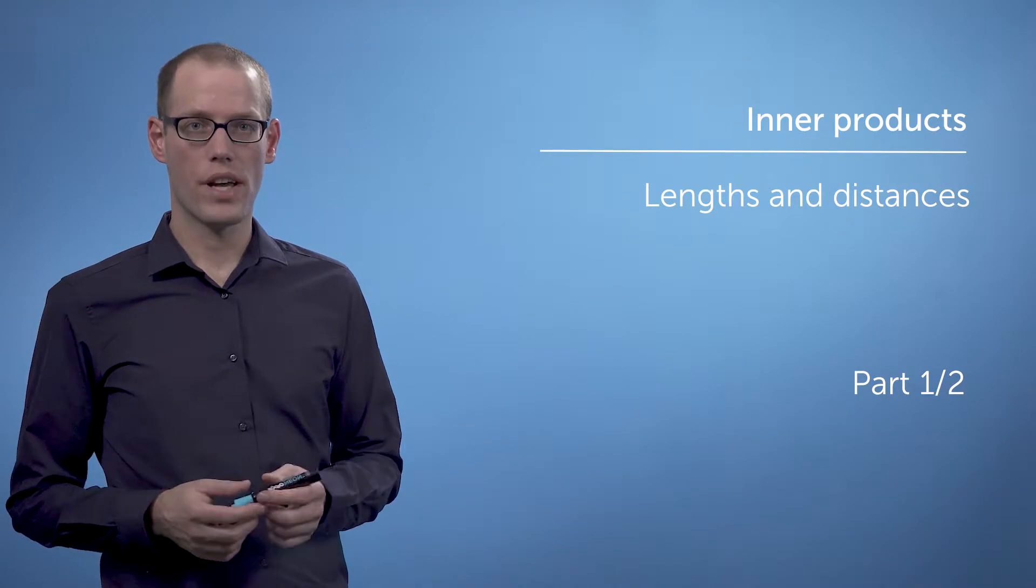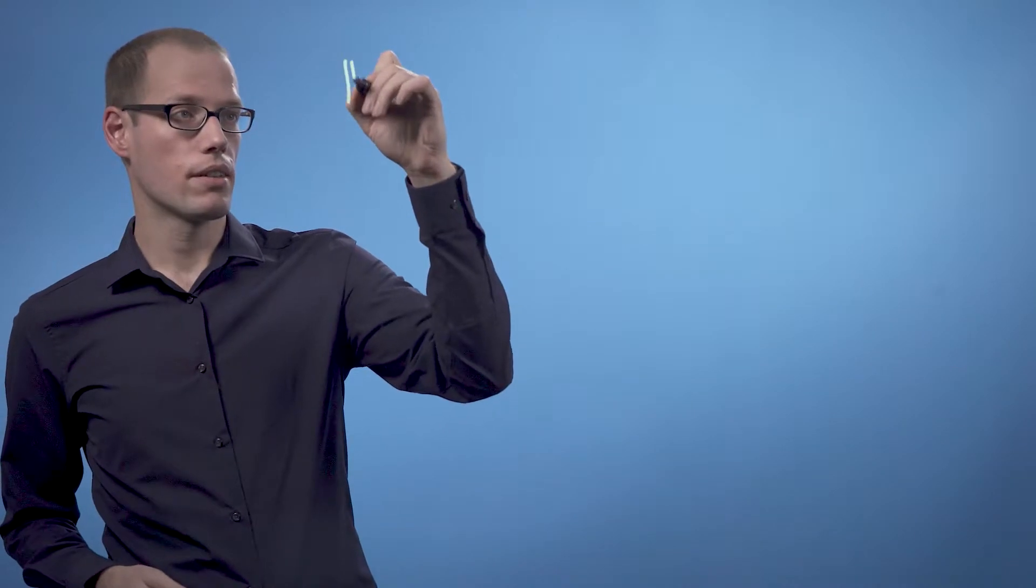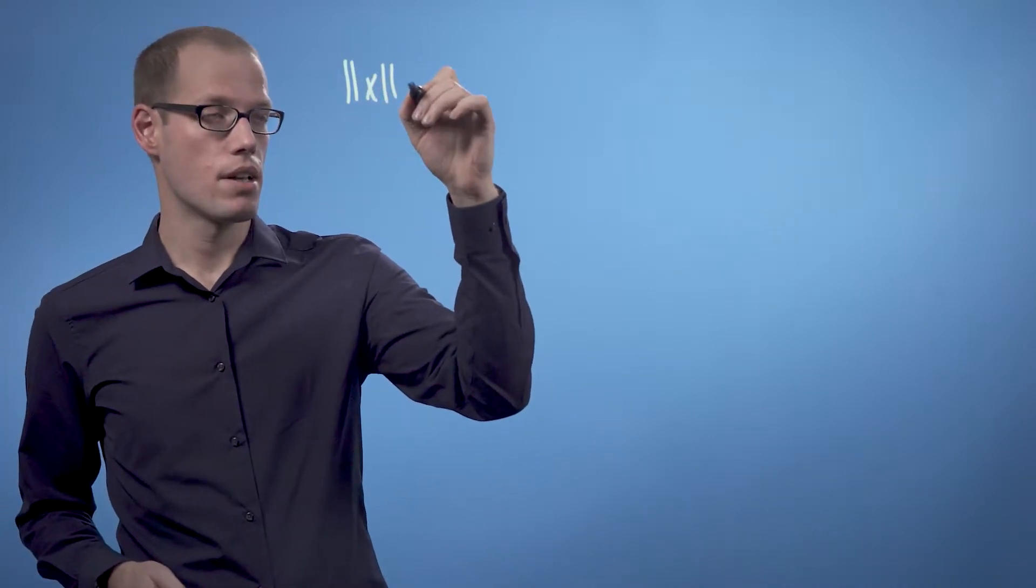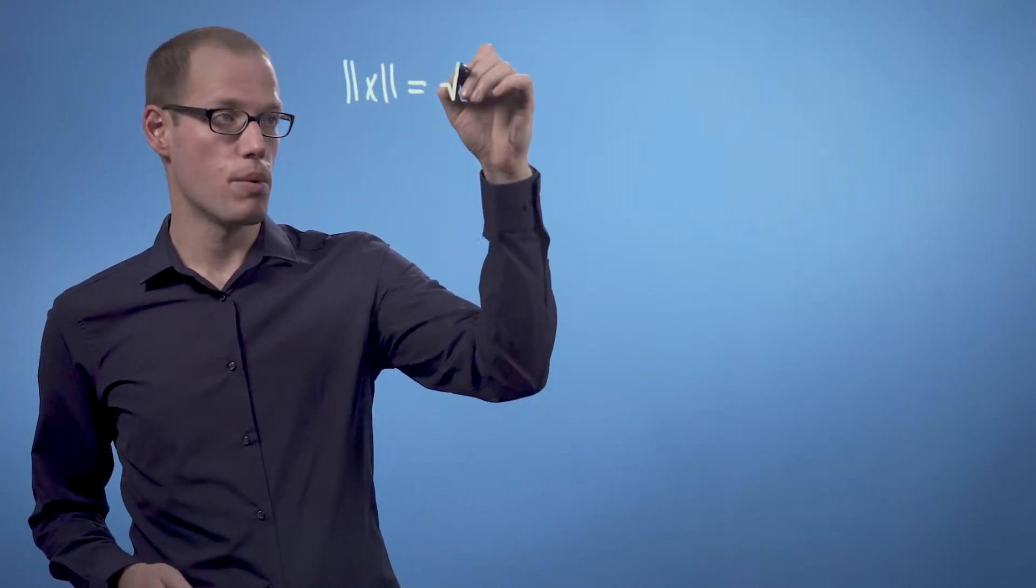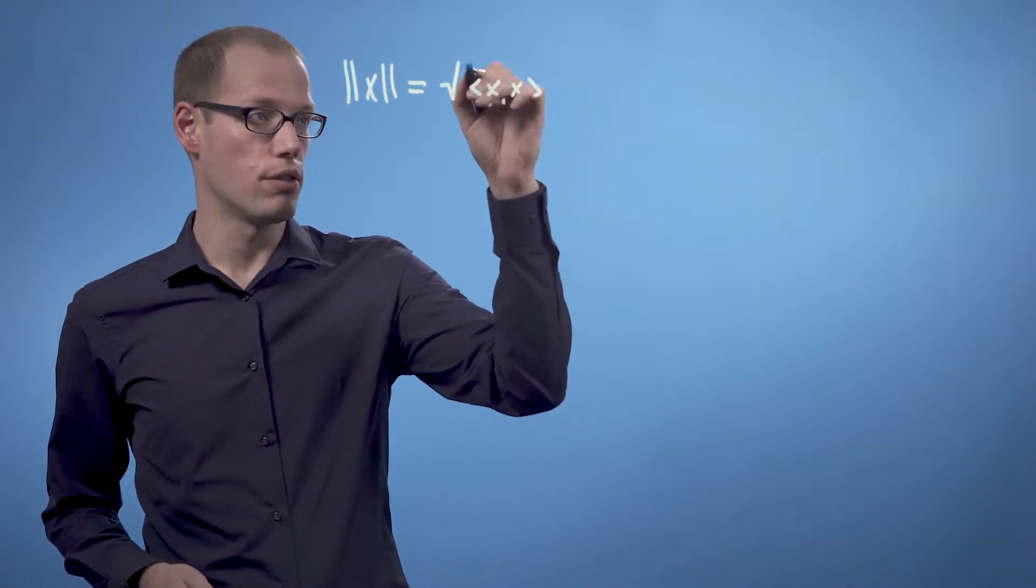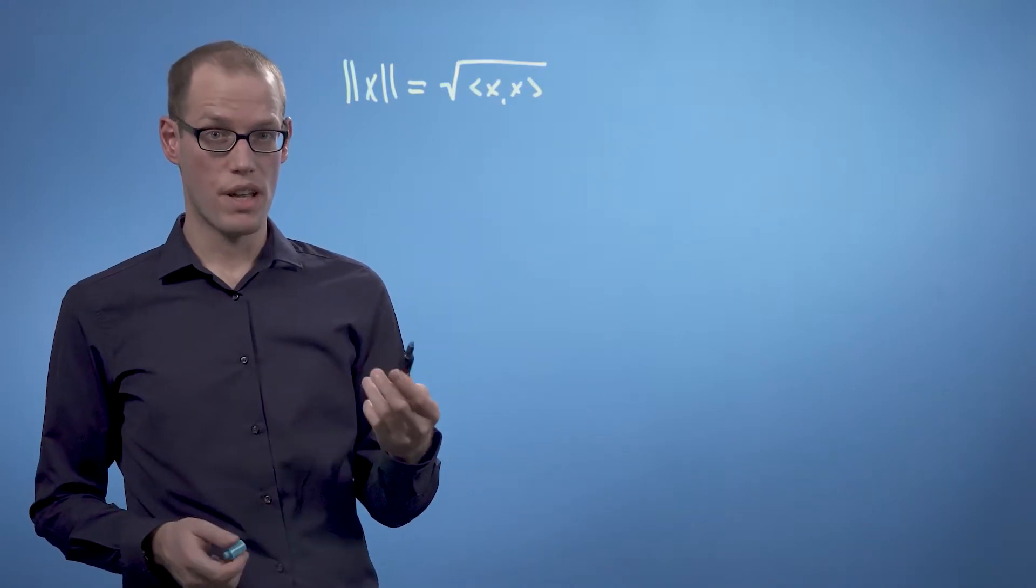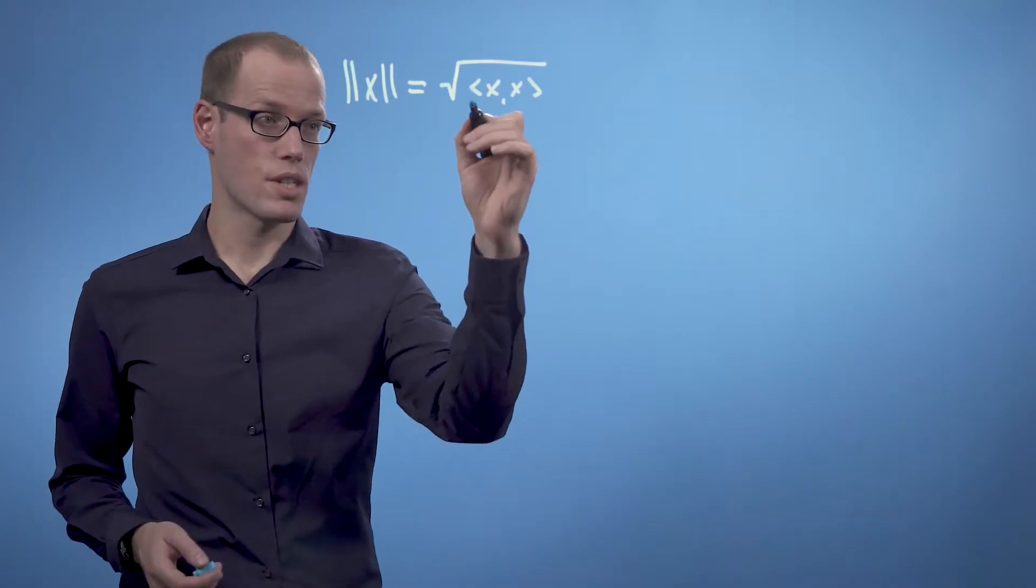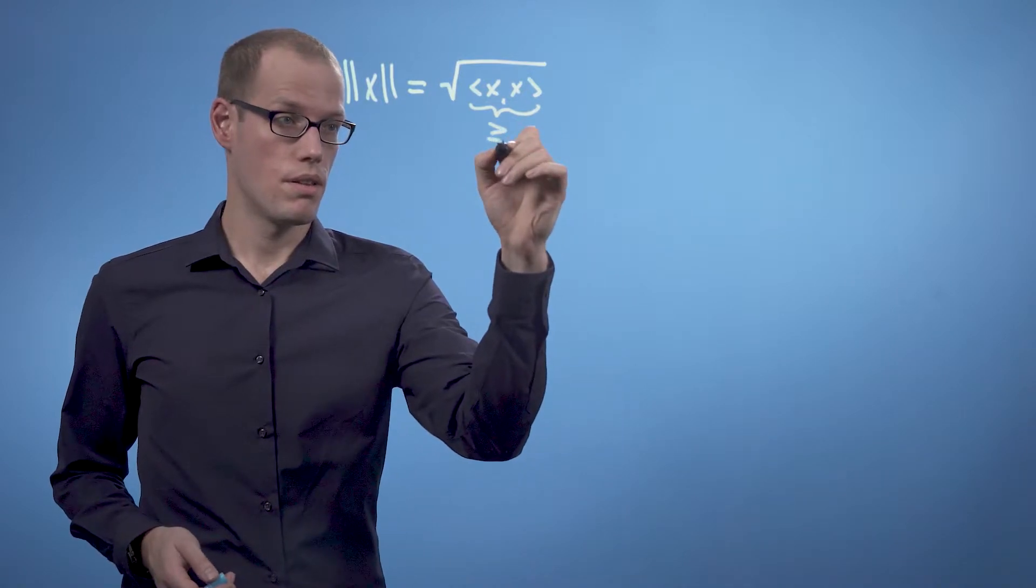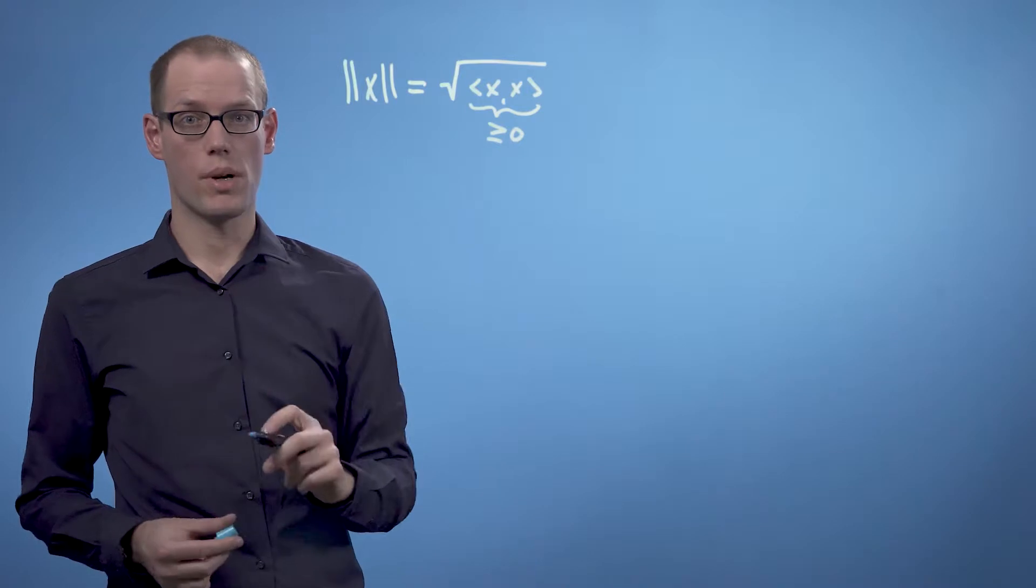The length of a vector is defined by the inner product using the following equation. The length of a vector x is defined as the square root of the inner product of x with itself. Remember that the inner product is positive definite, that means this expression is greater or equal than zero. Therefore we can take this square root.